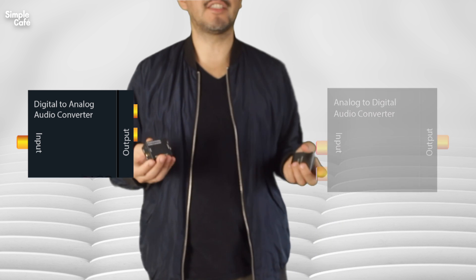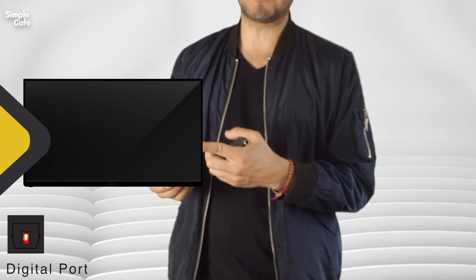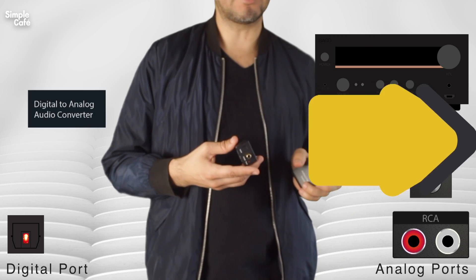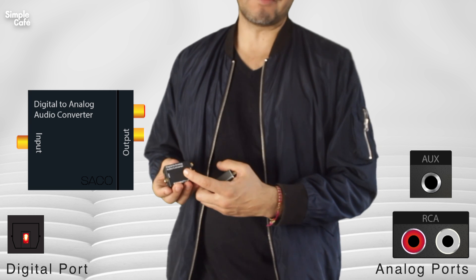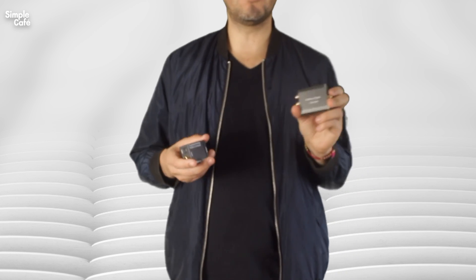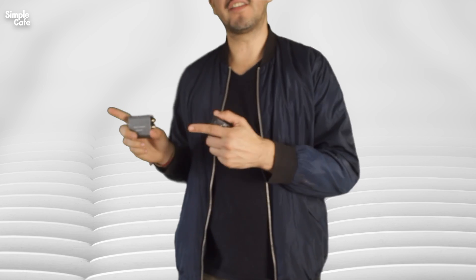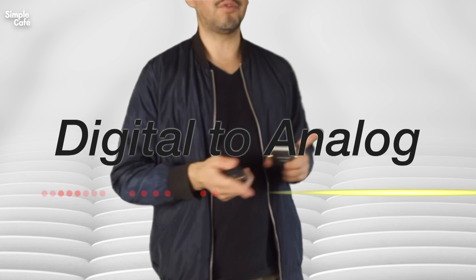And you see, the name actually explains it all. Since you want to convert a digital signal from your TV over into an analog signal, well, you need a digital-to-analog audio converter. Because otherwise, using the wrong kind is going in a different direction. You want to go from here to there. Digital-to-analog.